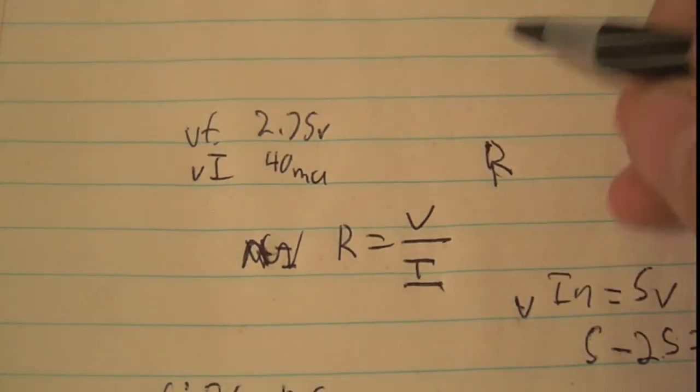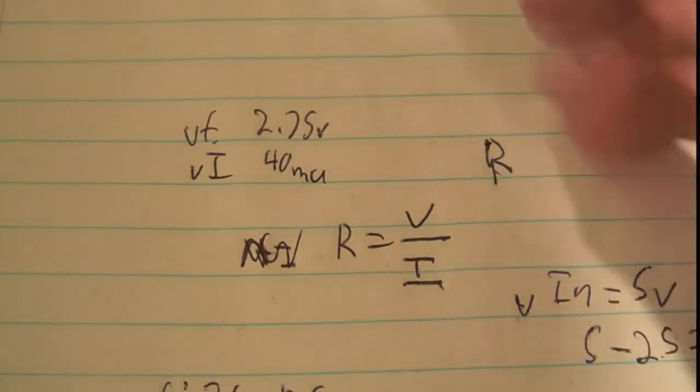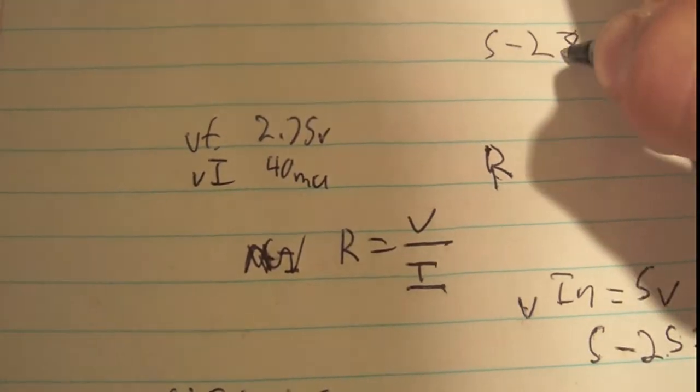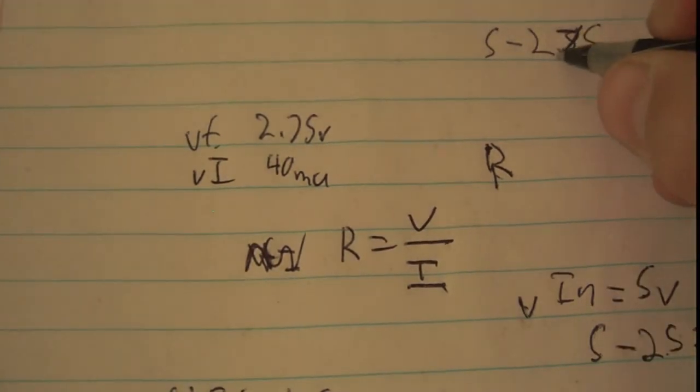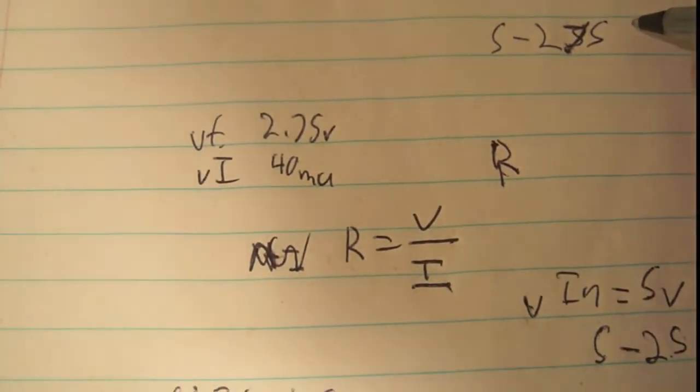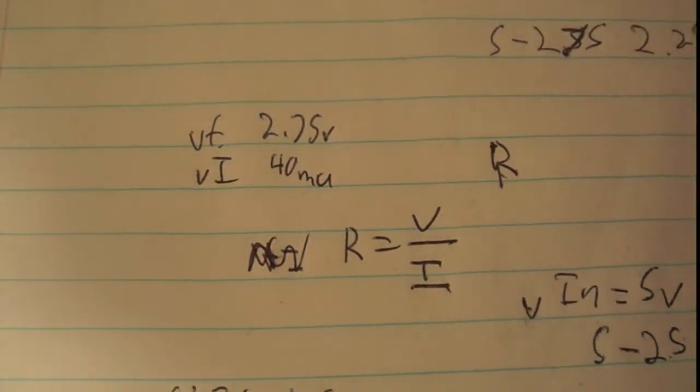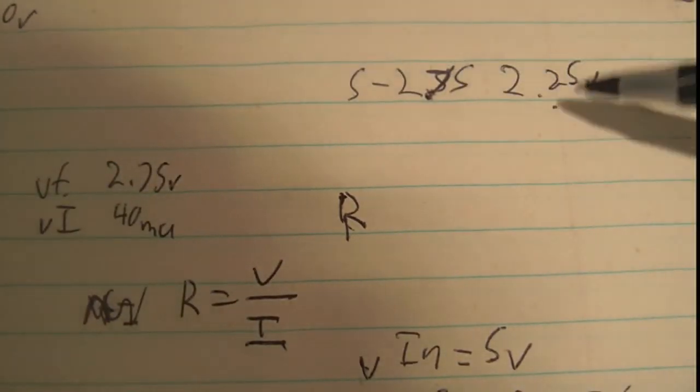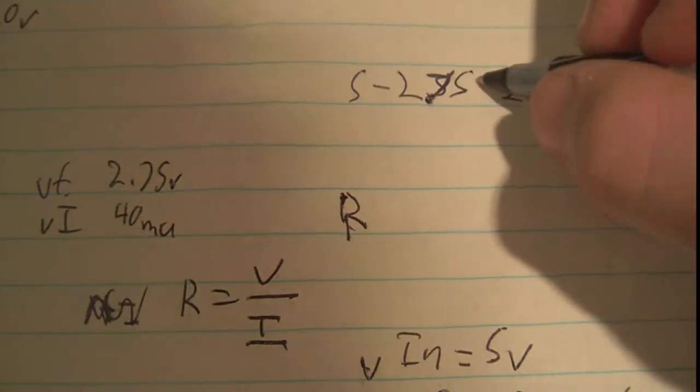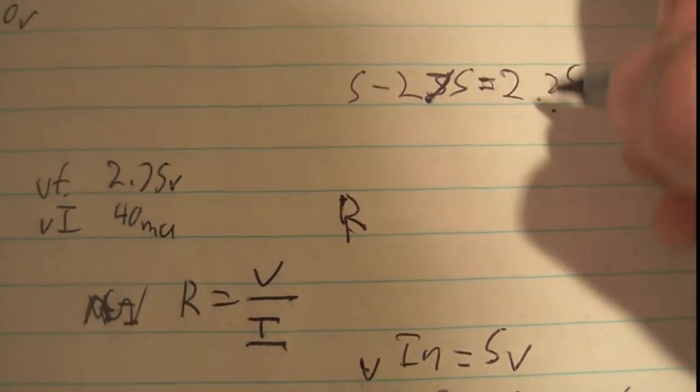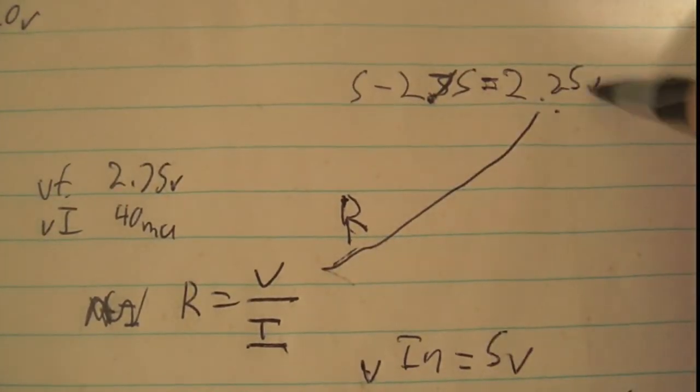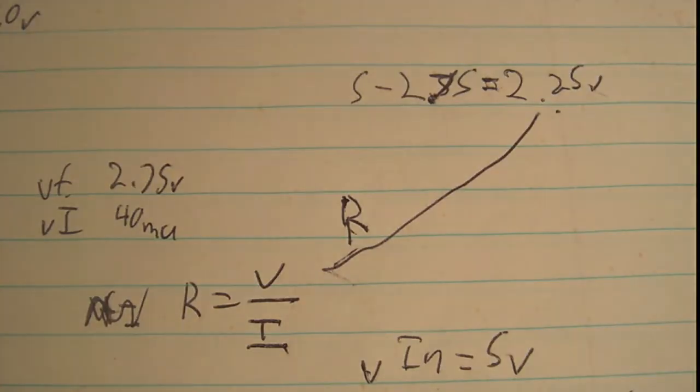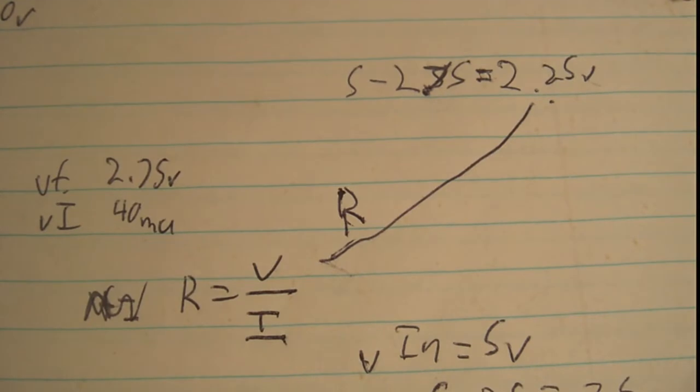In this case, if we're going to run this off of 5 volts supply, we're going to go 5 volts minus 2.75 volts, which is going to give us 2.25 volts that the resistor needs to drop. Because remember, the voltage that we're going to plug in here is the voltage that the resistor drops, not the voltage that the LED drops. So if you're going to go 2.75 plus 2.25, that's going to give you 5 volts, which is the total supply.